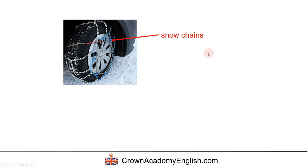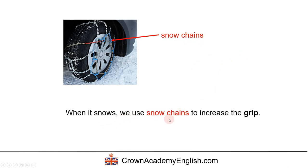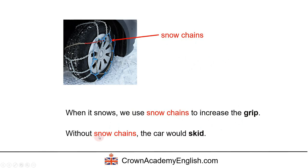Snow chains. So when it snows, we use snow chains to increase the grip. And without snow chains, the car would skid. So when it's snowing, we say that a car or a vehicle skids. And people — a person — slips. So we say people slip on the snow, and vehicles skid on the snow.